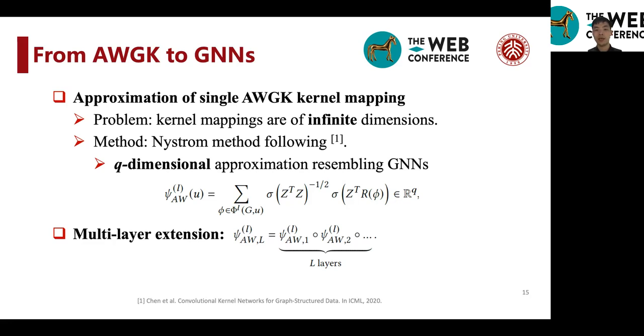And the approximation works just like a graph neural network, which is shown here. You can see that it aggregates different anonymous walks on a graph and does non-linear transformations on the features.